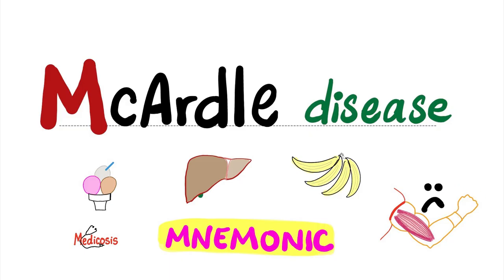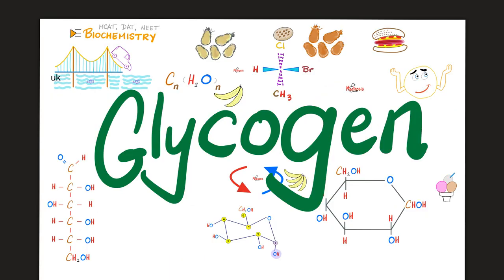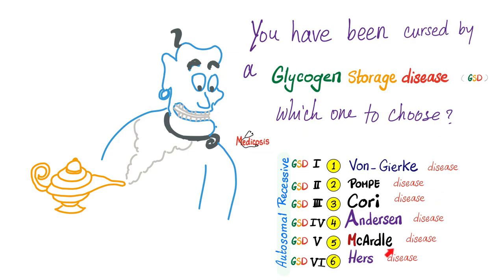McArdle with an M trashes your muscle with an M. Before you watch this video, please refer to another video called glycogen metabolism in my biochemistry for MCAT playlist. The glycogen storage diseases are: type 1 is von Goerke, type 2 is Pompey's disease, type 3 is Corey's, type 4 is Anderson, type 5 is McArdle, and type 6 is Ur's disease.